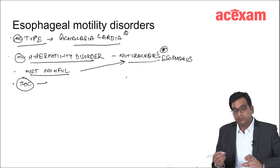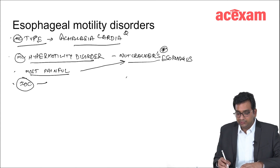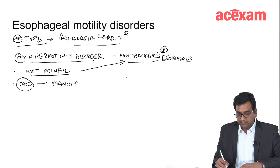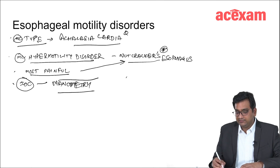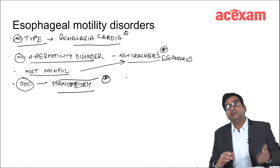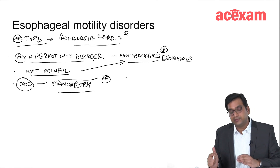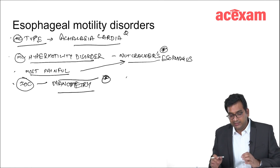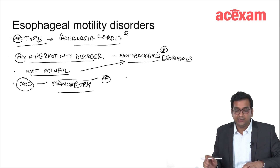The investigation of choice for all esophageal motility disorders is manometry — or pressure tracings as we can say. We measure the pressure of the esophagus and the lower esophageal sphincter, and this is how we diagnose the motility disorder.